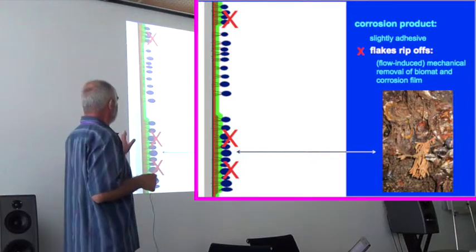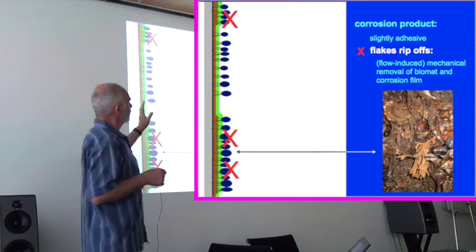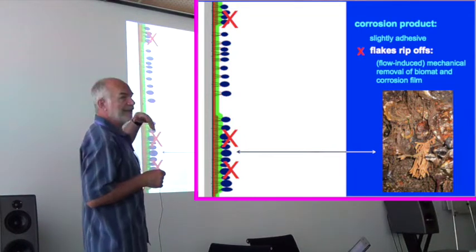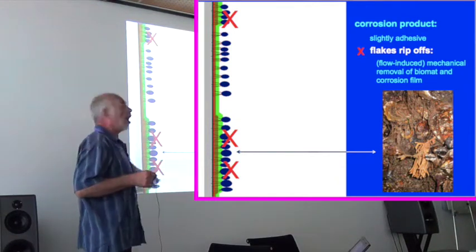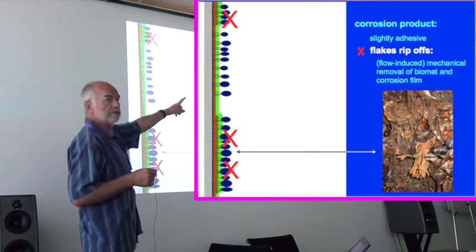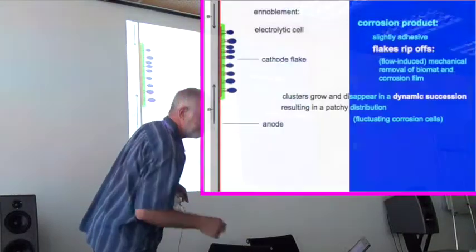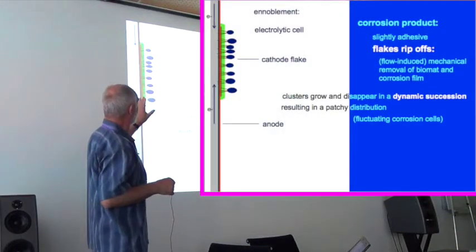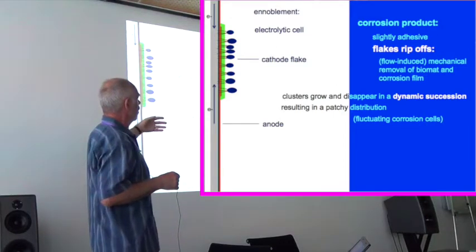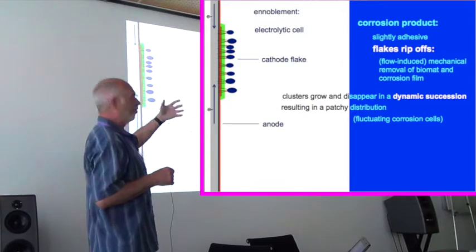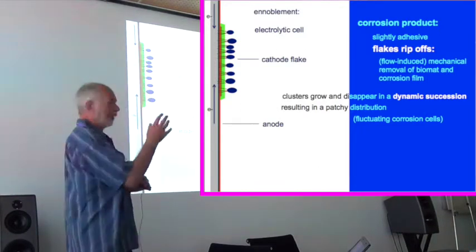Now, this macro fauna is growing, becoming more complex. And simply by mechanical removal whatsoever, they are falling out because the adhesion to the substrate is very light. This gives, when the flakes rip off, clusters of growing, falling, a dynamic succession, resulting in a patchy distribution.